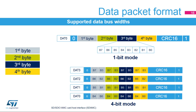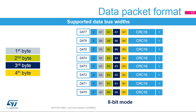In a 4-bit data width configuration, each line has its own start bit, end bit, and CRC16 checksum. In 8-bit mode, the 4 bytes are sent over the SDMMC bus so that for each SDMMC_CK clock cycle, a byte is shifted out with a start bit, end bit, and CRC16 checksum on each data line.